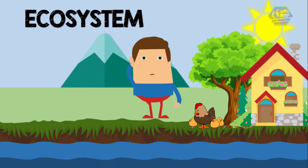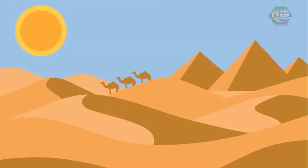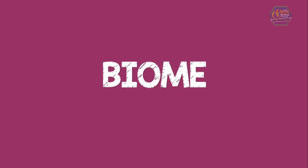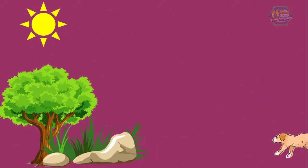An ecosystem is a specific area where organisms work together — that means they help each other to survive. It could be any size, from a tiny pool of water to hundreds of square miles of desert. Each ecosystem is different depending on the time and what creatures live in it. A group of ecosystems is called a biome. Biomes have similar weather, rainfall, animals, and plants.